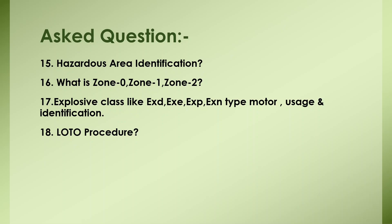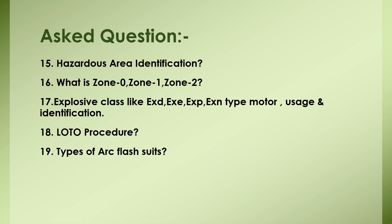Lockout/tagout (LOTO) procedures were asked — how do you lock out and tag out, and what is the procedure in your plant? They also asked about arc flash suits during isolation at different voltage levels: 8 cal/cm² for 415 V, 25 cal/cm² for 6.6 kV, and 40 cal/cm² for 33 kV levels.